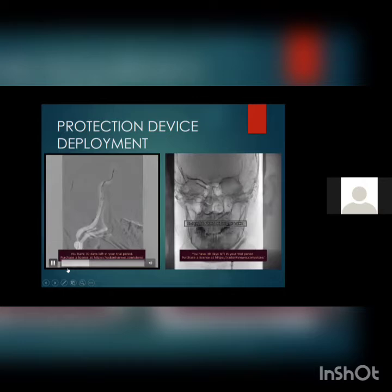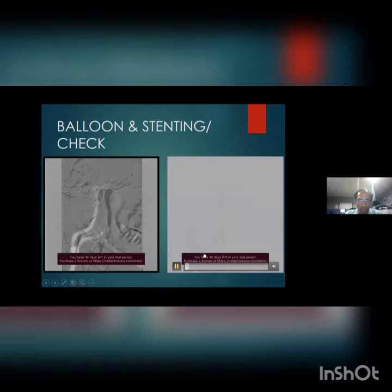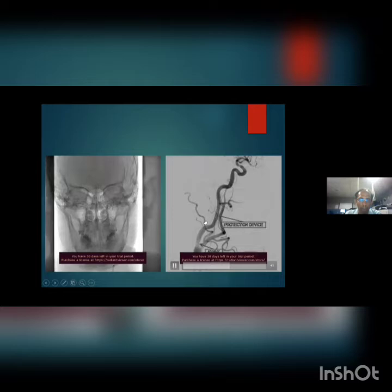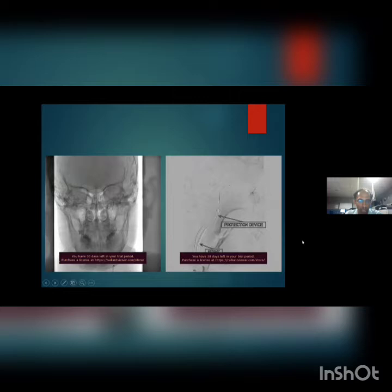After placing the embolic protection device, the stent is deployed. If the stent is adequately opened, we do not aim for perfect anatomical cure. In carotid stenting, a small residual stenosis of up to 15 to 20 percent is acceptable. If you over-dilate, there are chances of hyperperfusion hemorrhage. Up to 80 percent opening is sufficient to improve intracranial flow.